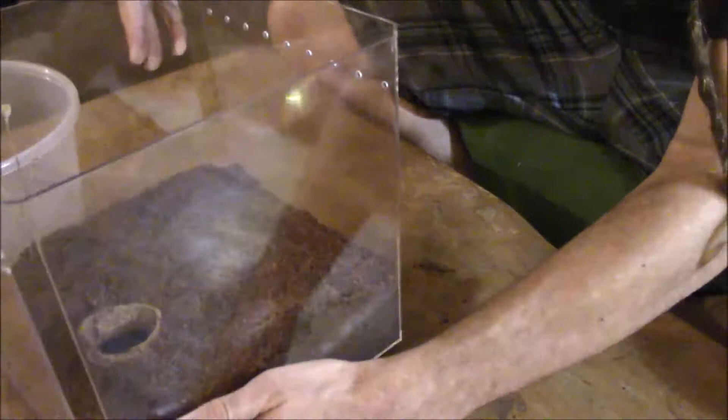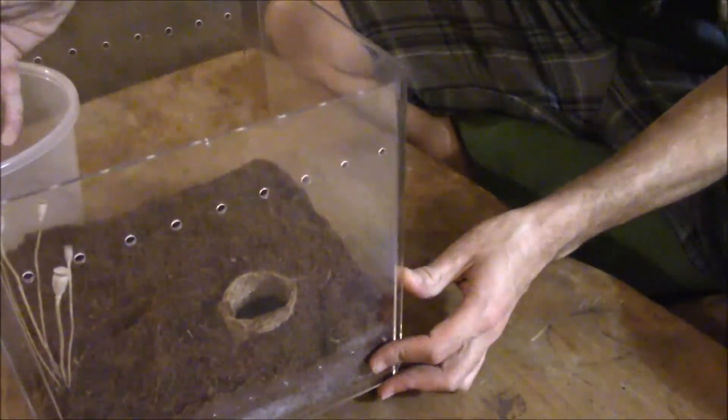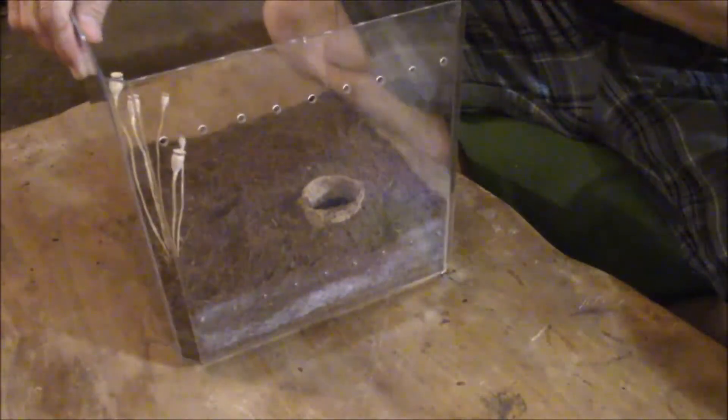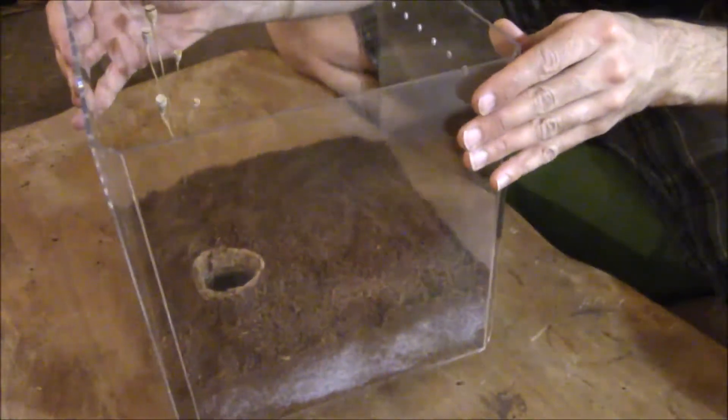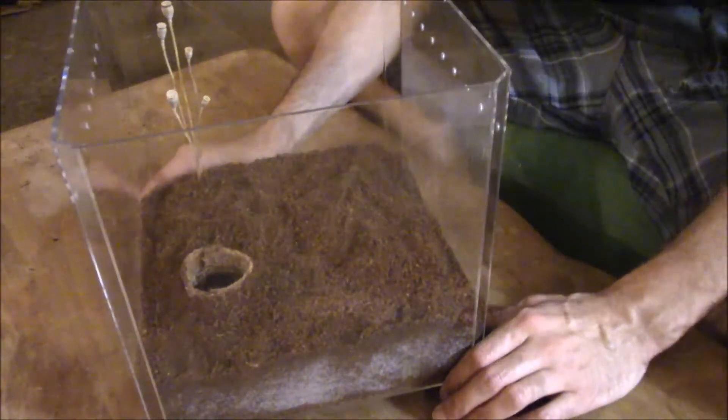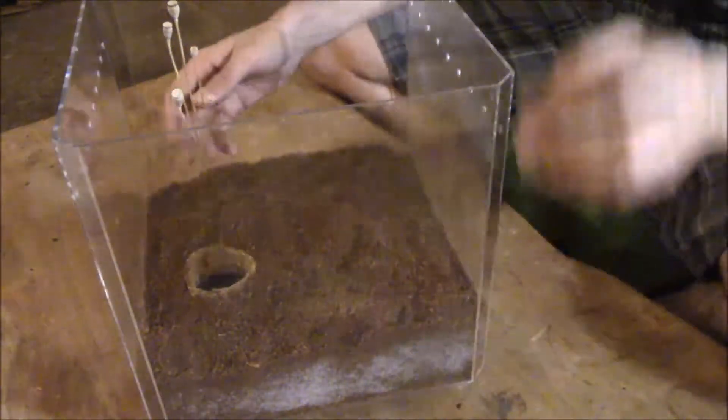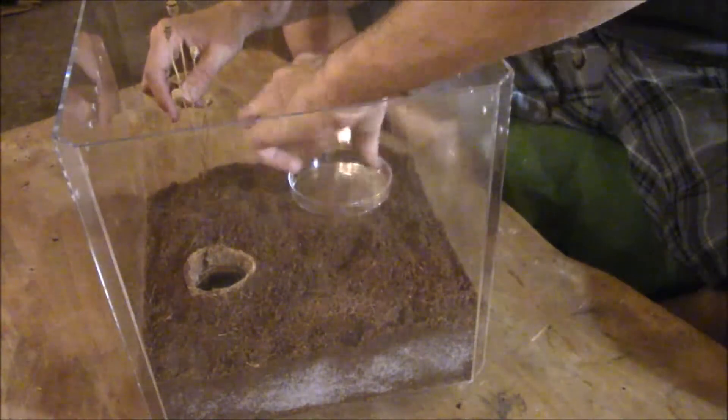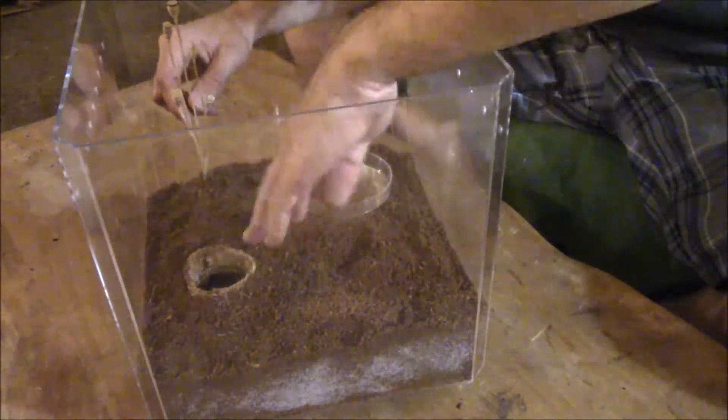Alright so there we go, so we got like three inches of substrate it looks like, underground deal there. Yeah I'm liking that, it's pretty cool. Here we go, this camera's got me all confused and backwards, I need to set it so it's reversed on the backwards screen so it doesn't keep messing me up. Alright so I guess it's just down to rehousing the OBT, there's a water dish, it's gonna do fine right there. I guess I'll go get her.